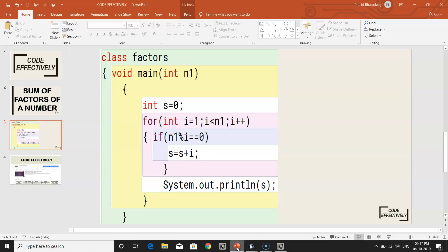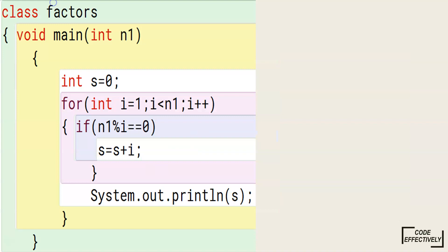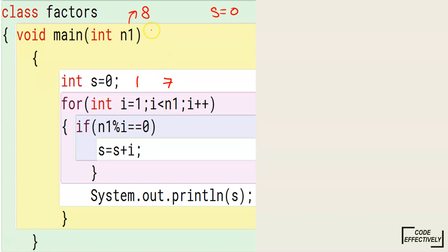Now let's see what happens during execution — let's do the dry run of this program. We will follow the same procedure manually. Let's say n equals 8. The user has input 8. After this, int s equals 0, so initially the value of s is 0. The for loop for i will run from 1 and go up to 7, because i is less than n which is 8, so less than 8 means up to 7.